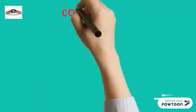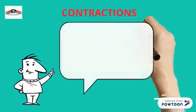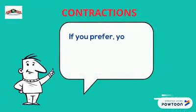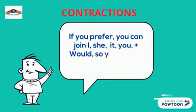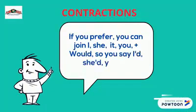Contractions: If you prefer, you can join I, she, it, you, etc. plus 'would,' so you say I'd, she'd, it'd, you'd, and so on.